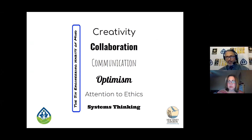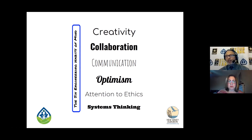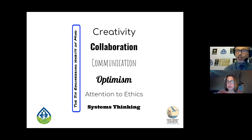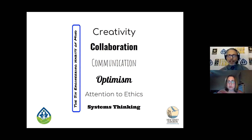We talk about the six engineering habits of mind: creativity, collaboration, communication, optimism — when we're talking about climate change, we want to be optimistic — attention to ethics, and really importantly, systems thinking. When talking about solutions with climate change, we don't want the quick-fix short-term. We want long-term. Kids have visionary outlooks towards solving a problem, and that really has to look at systems thinking and life cycle assessment. The six engineering habits of mind should be included or at least paid attention to — they are good fundamentals to include when moving forward with a design challenge.